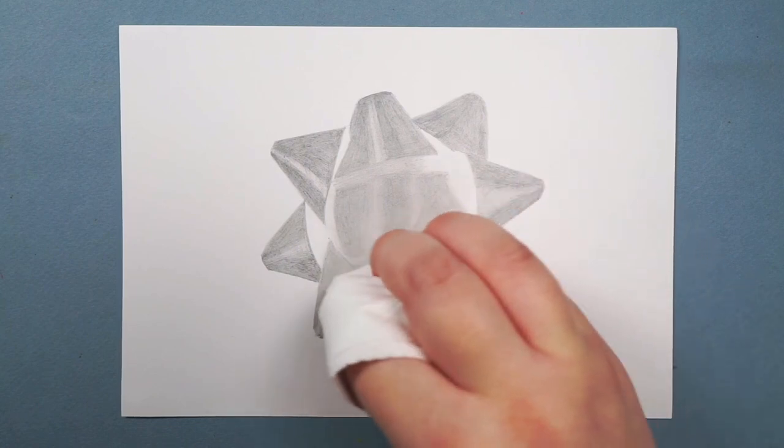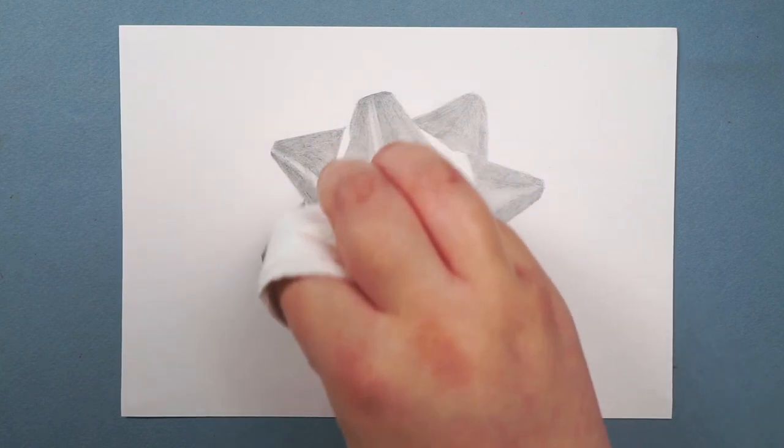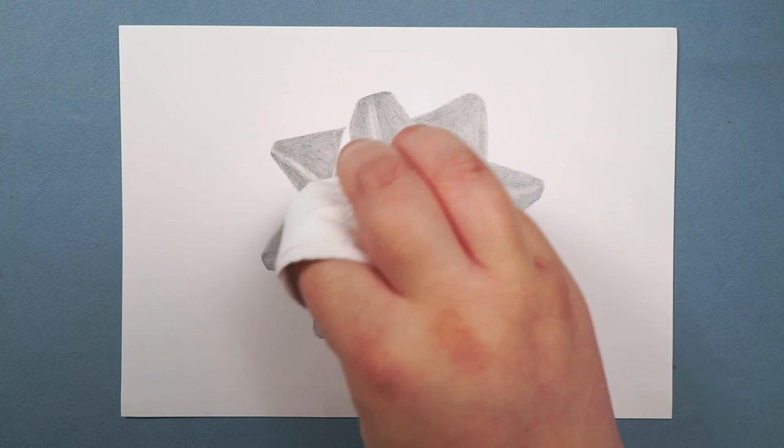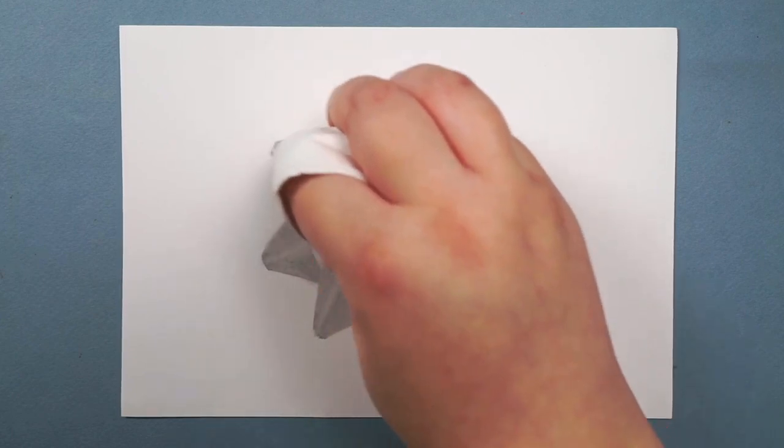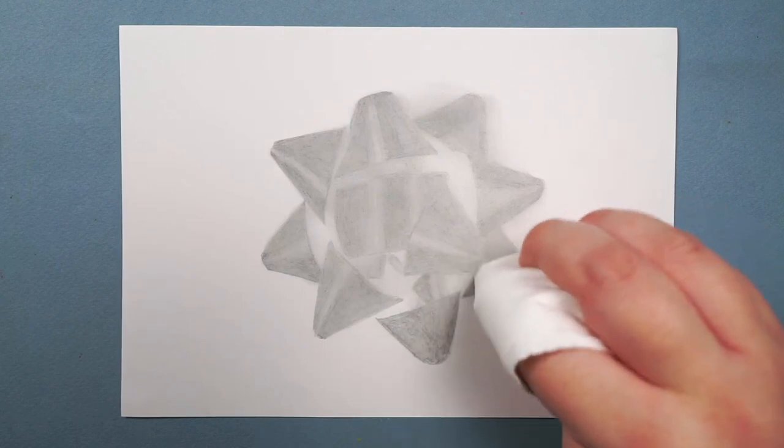If I find that it's starting to look a little bit too smudgy, then I will re-wrap the tissue in a different place so that I've got a fresh section. And if I feel like it needs more blending than I'm getting, then I'll just go over the area more times. Once it's blended, it looks like this.